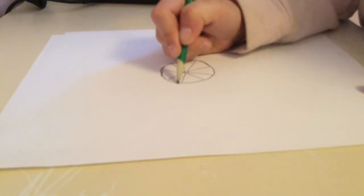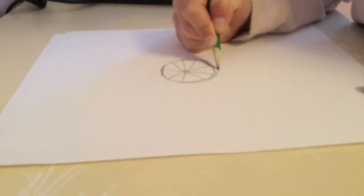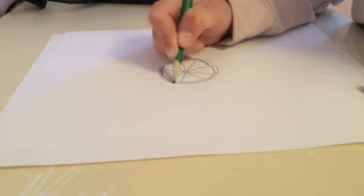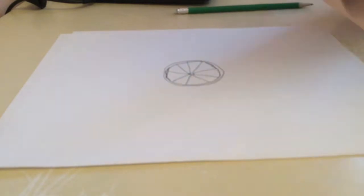Then you're gonna draw another circle right here, and then you are all done with the grapefruit. It should look like this at the end.